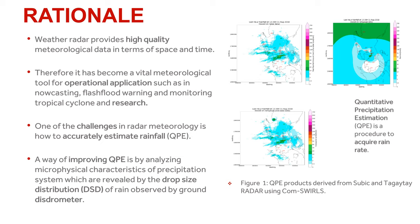Weather radar provides high quality meteorological data in terms of space and time. Because of this, it has become a vital tool for different meteorological applications, both in operations and in research. In PAGASA, radars are used for rainfall and thunderstorm warning systems, as well as for monitoring tropical cyclone movement. One of the challenges in using radar is how it accurately estimates rainfall, and a way to improve this is through analyzing the microphysical characteristics of the precipitation system, which are revealed by the drop size distribution of rain observed by ground distrometers.